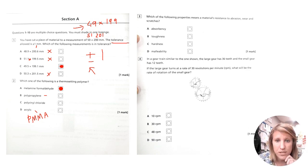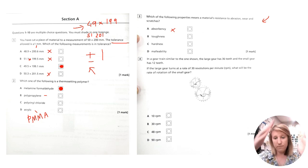Which of the following properties means a material's resistance to abrasion, wear and scratches? Notice again, we've got another material properties question here. It's not absorbency. That's how something absorbs moisture or water. It's not toughness. That's how something can take an impact. It's not going to snap or break. Hardness means a material's resistance to abrasion or scratches. So that's the correct answer because malleability is its ability to be hammered into or pressed into a shape.